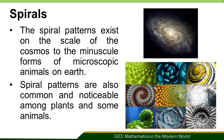The next are spirals. The spiral pattern exists in the scale of the cosmos to the minuscule forms of microscopic animals on Earth. The Milky Way, which contains our solar system, is a barred spiral galaxy with a band of bright stars emerging from the center running across the middle of it. Spiral patterns are also common and noticeable among plants and some animals. Spirals appear in many plants such as pine cones, pineapples, and sunflowers. Animals like ram and kudu also have spiral patterns on their horns.